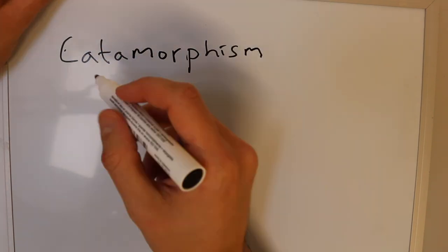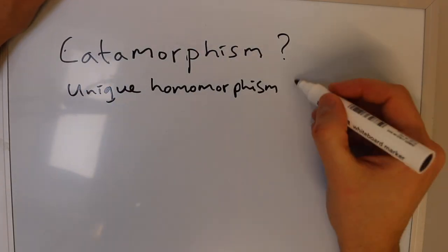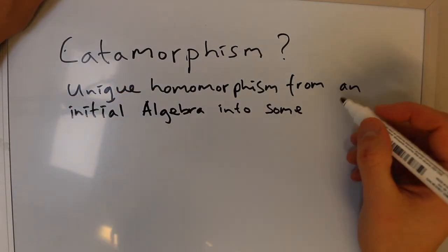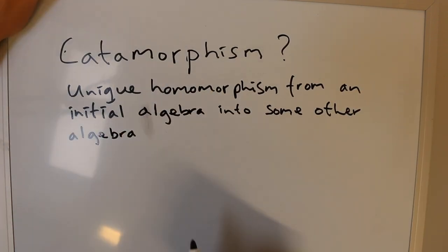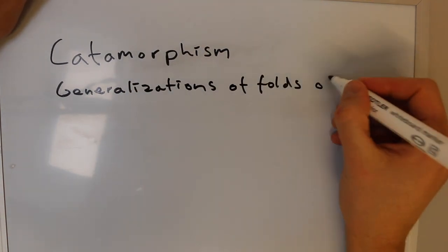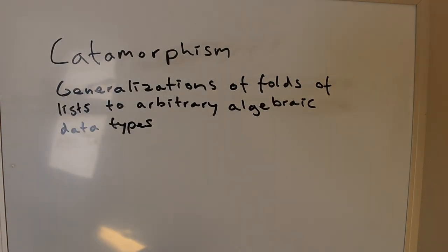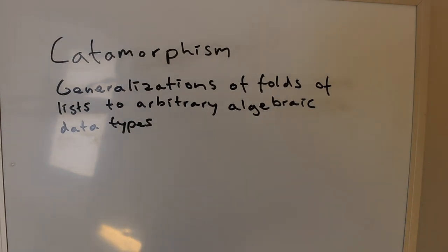What is a catamorphism? The definition on Wikipedia isn't very helpful — it's the kind of definition that's useful only when you already know the answer. It says that in category theory it's the unique homomorphism from an initial algebra into some other algebra, and in functional programming it's the generalization of folds of lists to arbitrary algebraic data types. This kind of definition is only useful after you've already gained understanding of the subject, so if you haven't, this video is for you.